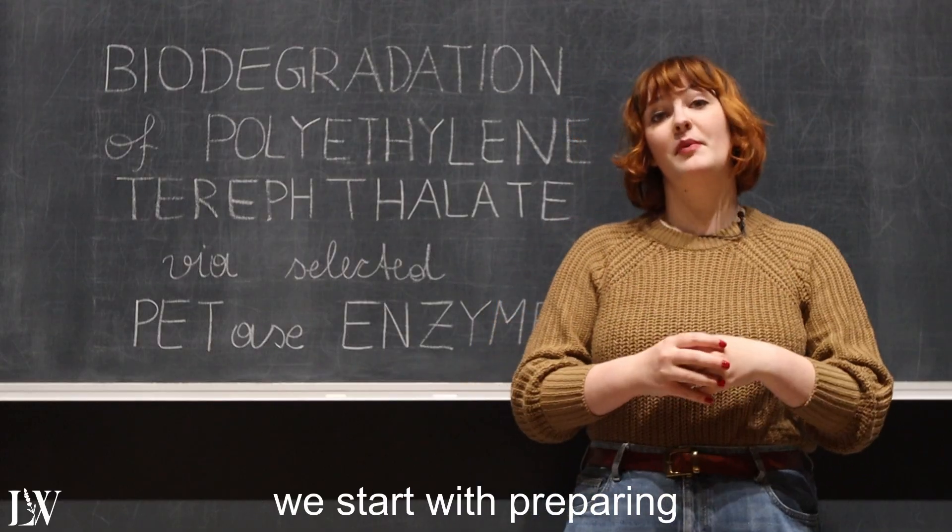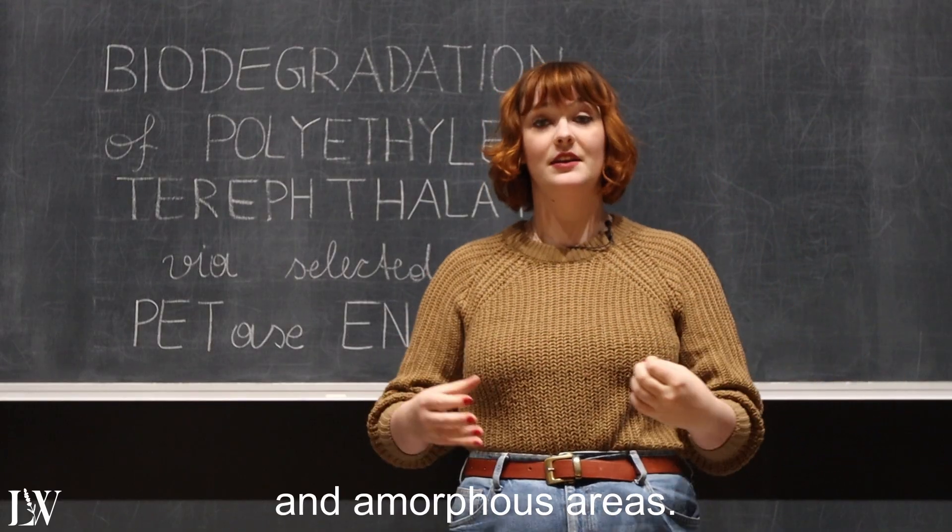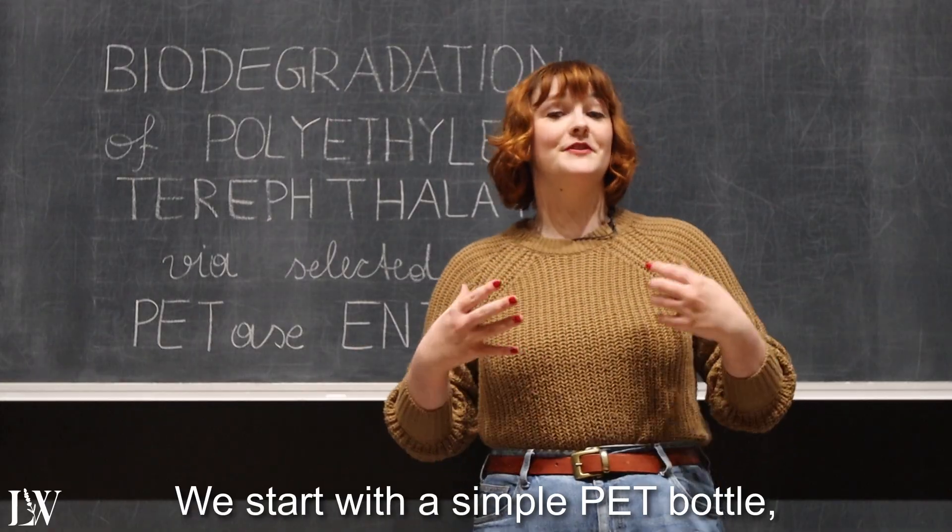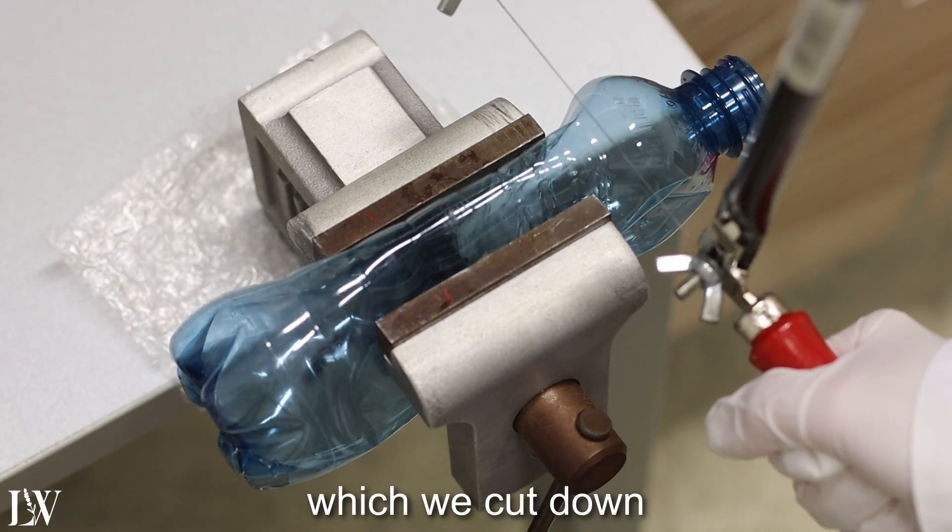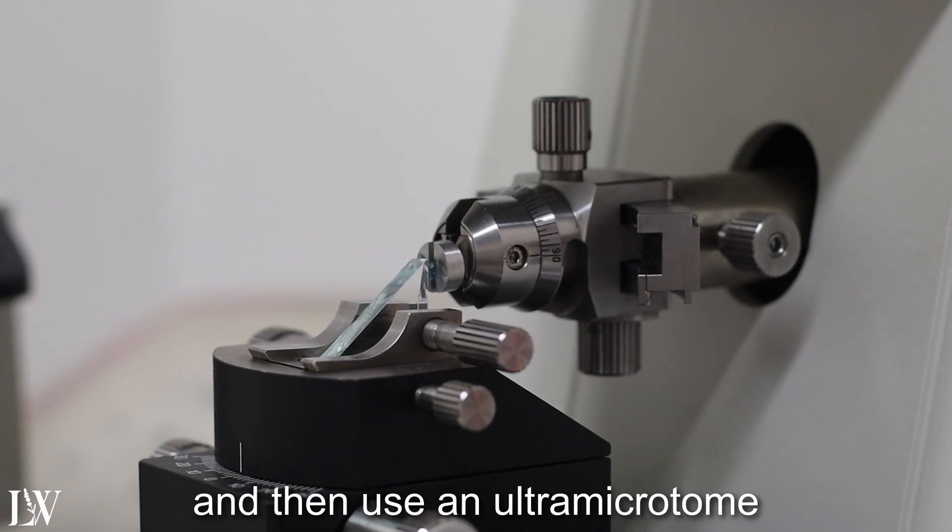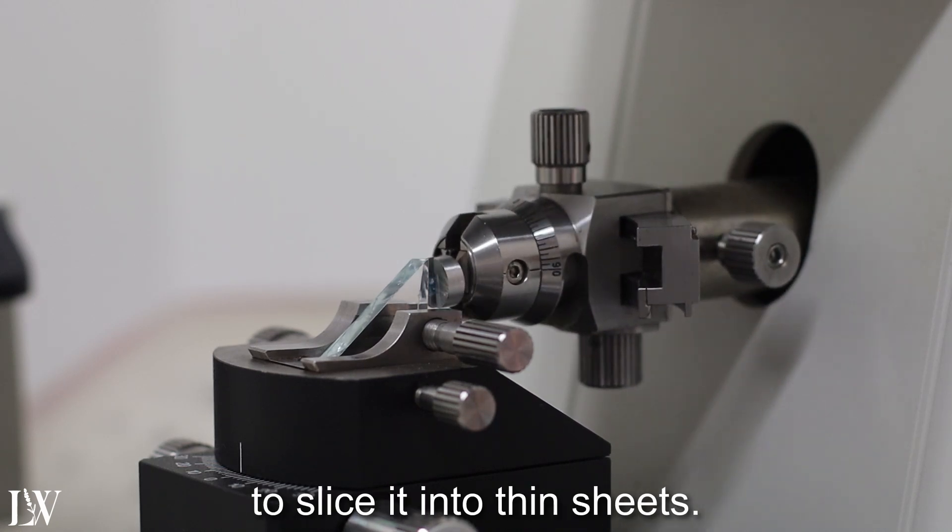To watch petase in action, we start with preparing PET samples with both crystalline and amorphous areas. We start with a simple PET bottle, which we cut down into small pieces, and then use an ultra microtome to slice it into thin sheets.